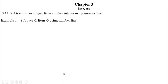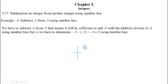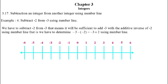Example 4: subtract minus 2 from minus 3 using the number line. I write minus 3 minus (minus 2). Since we are subtracting minus 2, the additive inverse of minus 2 is plus 2, so we add plus 2 with minus 3. On the number line, we go 3 steps to the left of 0 and reach minus 3. The second number is plus 2, so we go two steps to the right of minus 3 and reach the point minus 1. Thus, minus 3 minus (minus 2) equals minus 1.